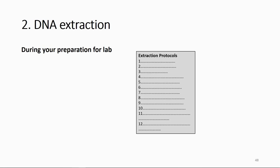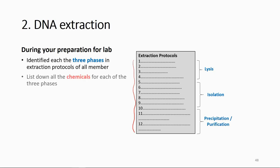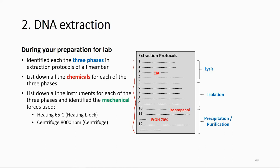When you prepare for your lab, list out all the steps by watching the video. In your lab report discussion, identify each of the three phases — which steps are lysis, which are isolation, and which are precipitation. Also list all the chemicals used in each phase, all the instruments for each phase, and identify the mechanical forces — for example, using a heating block at 65°C or using a centrifuge. Each chemical and mechanical force has a specific purpose in each phase of DNA extraction.